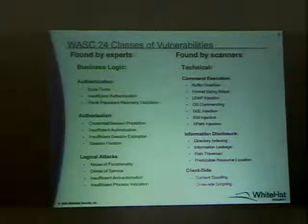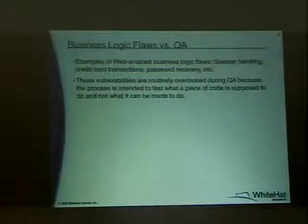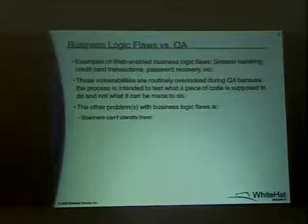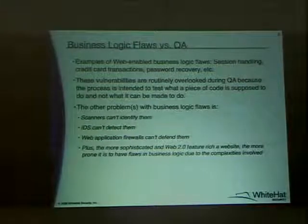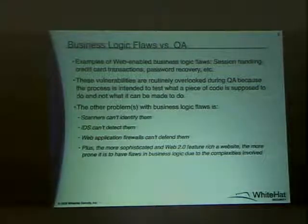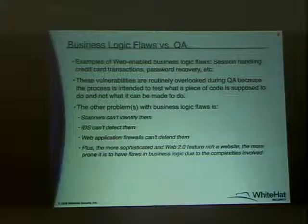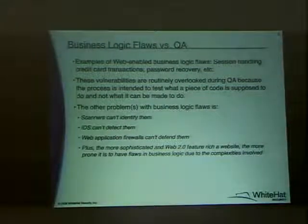What is it about these business logic flaws that makes them so difficult to deal with? We talk a lot about security in the SDLC, but business logic flaws are often missed because QA's job is to test and make sure the software does what it's supposed to do — not what it can be made to do. It's diametrically opposed. Scanners don't find them, IDS doesn't detect them, and web application firewalls can't defend against them. We have to find them, usually by people specifically looking for these issues.